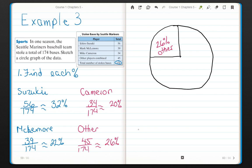Let's see. Now I see that 32% plus 20% is 52%. So Cameron and Suzuki make just about half—not quite half, a little bit more. So let's actually use this.